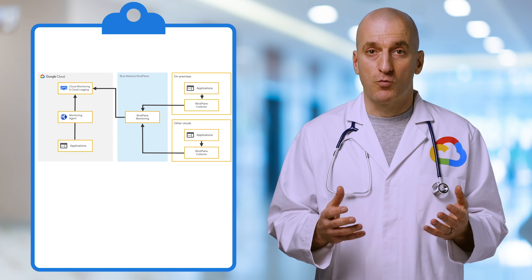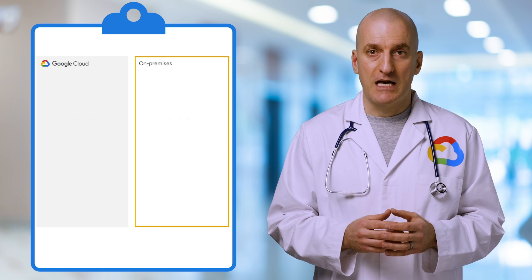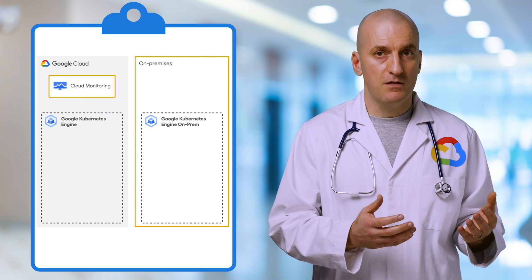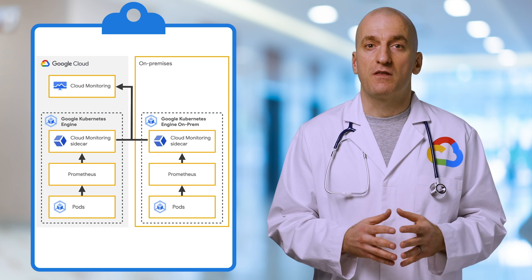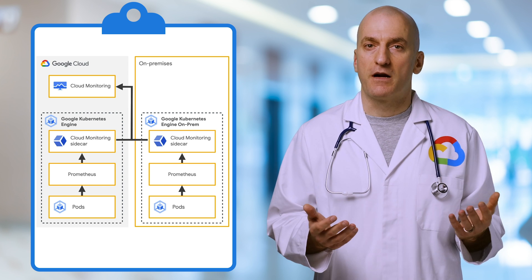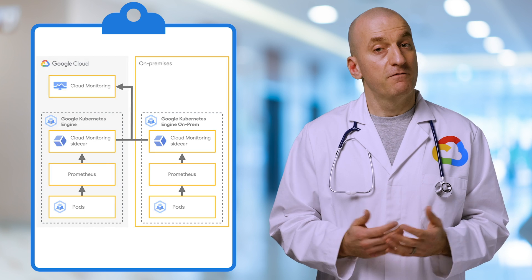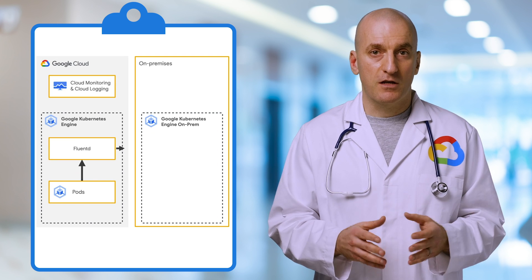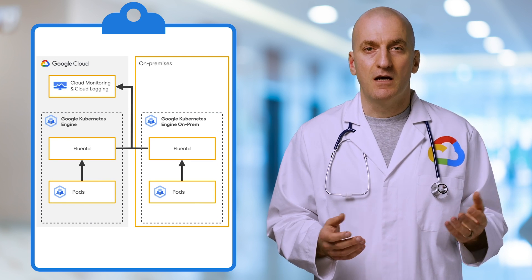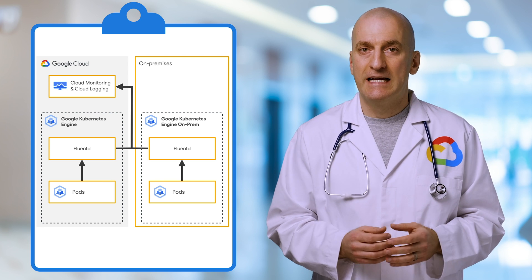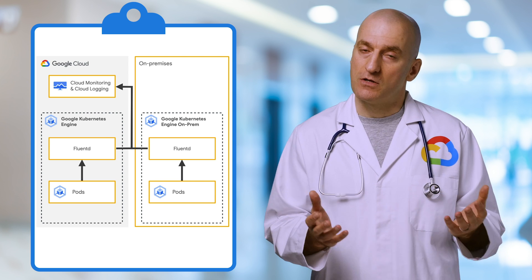If you're looking to monitor workloads on Kubernetes clusters running both in Google Cloud and elsewhere, you can use the combination of Prometheus, Cloud Monitoring, and the Cloud Monitoring Prometheus sidecar to ingest Prometheus metrics into monitoring for a unified monitoring approach. Finally, you can use a similar approach to collect logs from multiple Kubernetes clusters by using FluentD, a popular open source logging agent, and having it send both infrastructure and application logs to Cloud Logging.